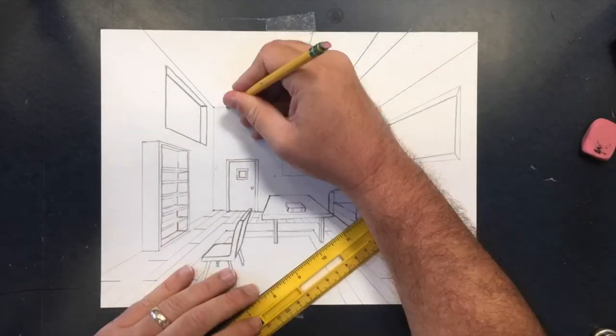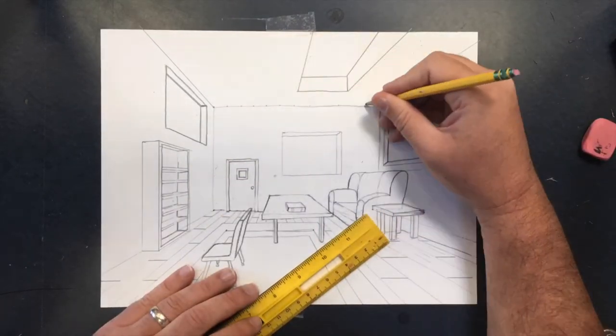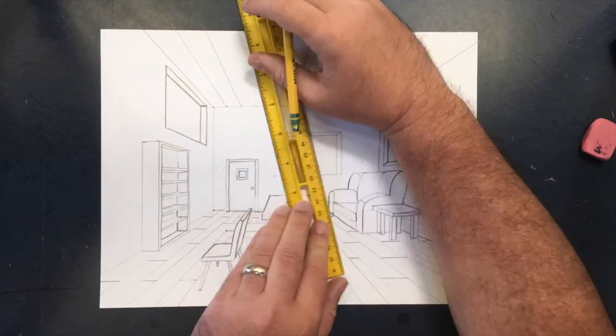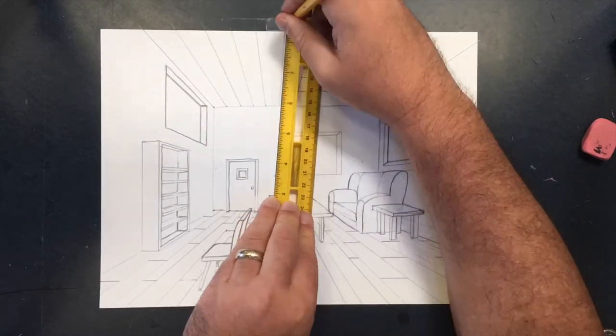For the floor and the roof here, I made evenly spaced dots on the back wall, and then I used the vanishing point to help me create that wooden floor and now this tiled ceiling.